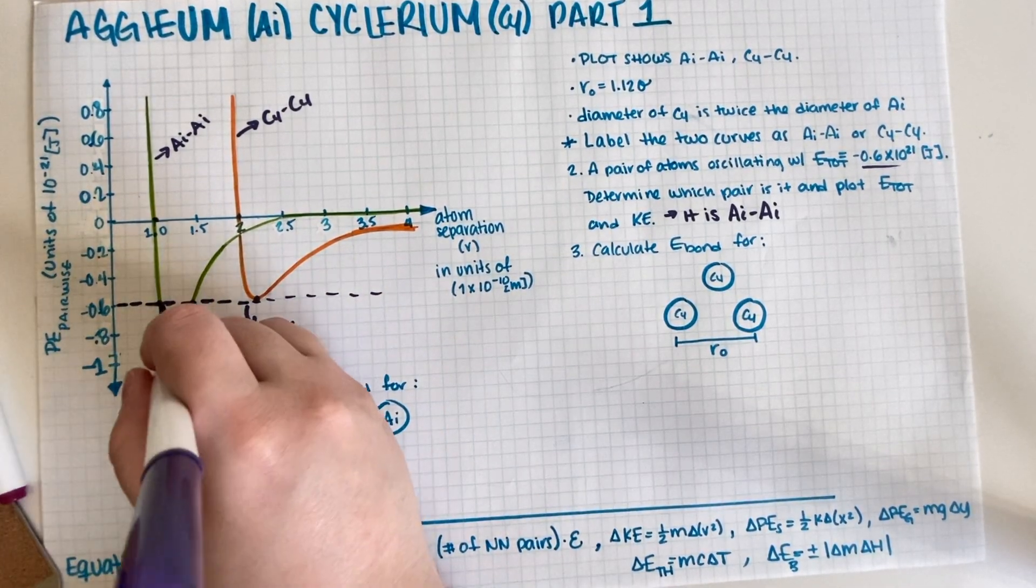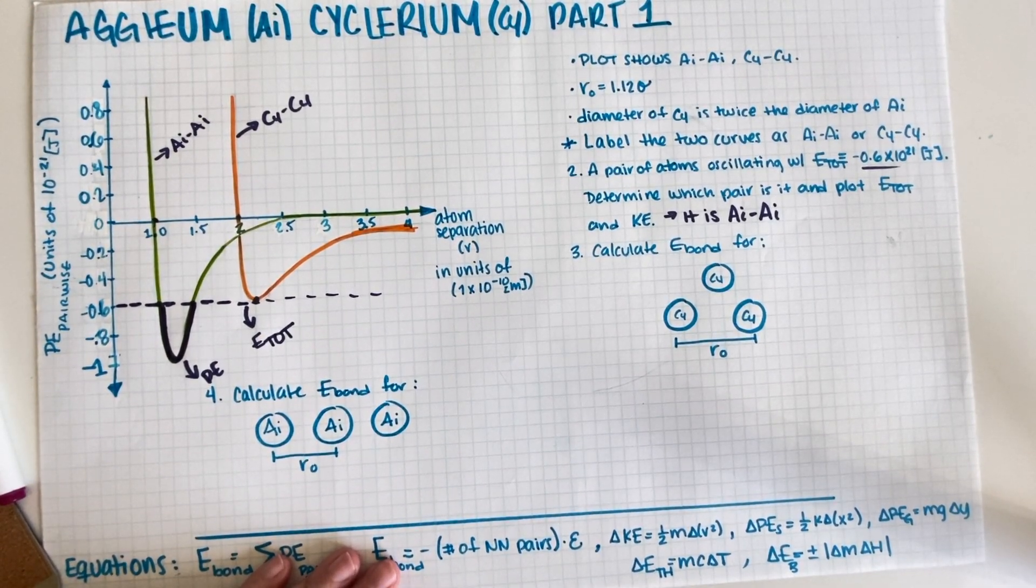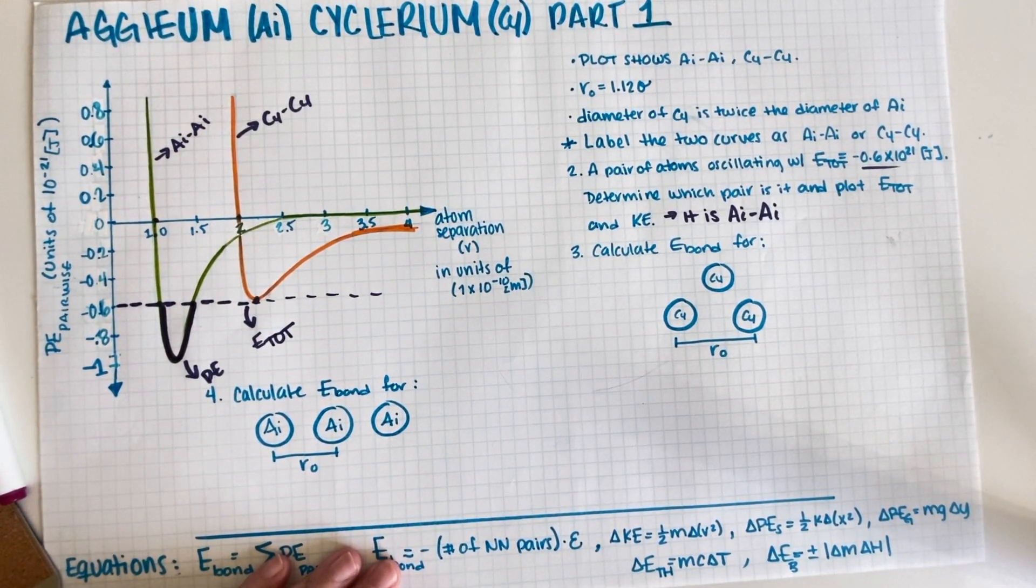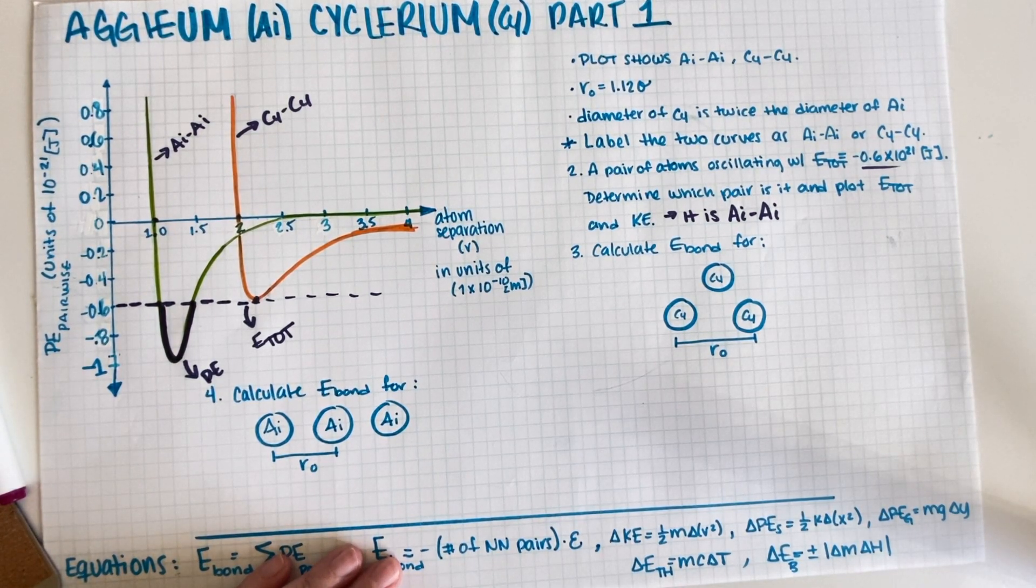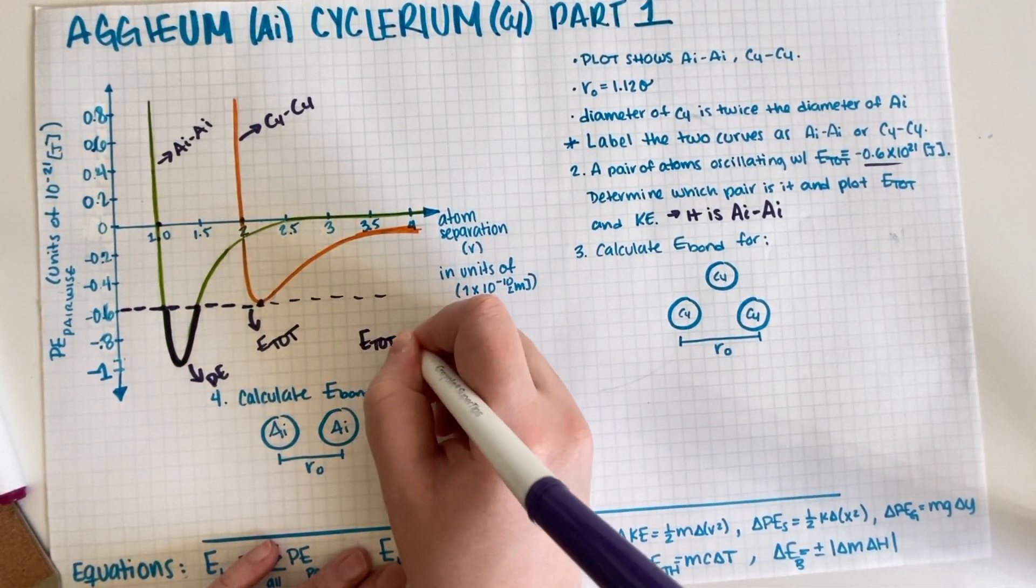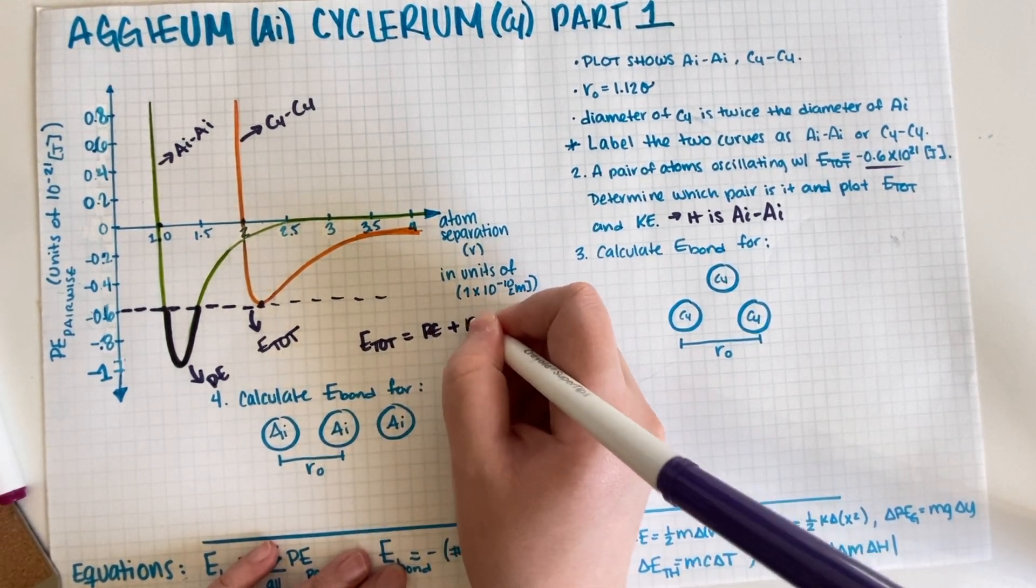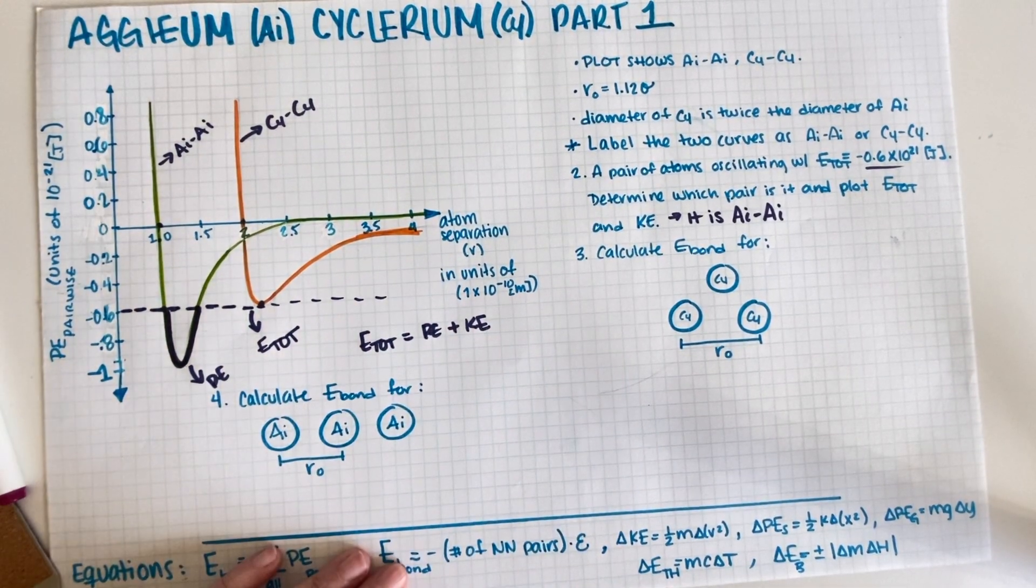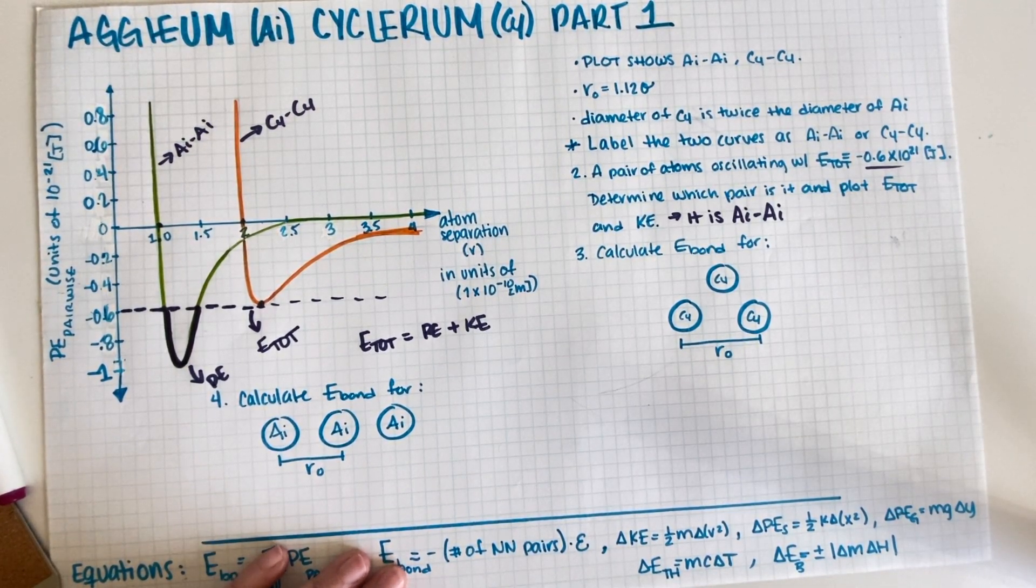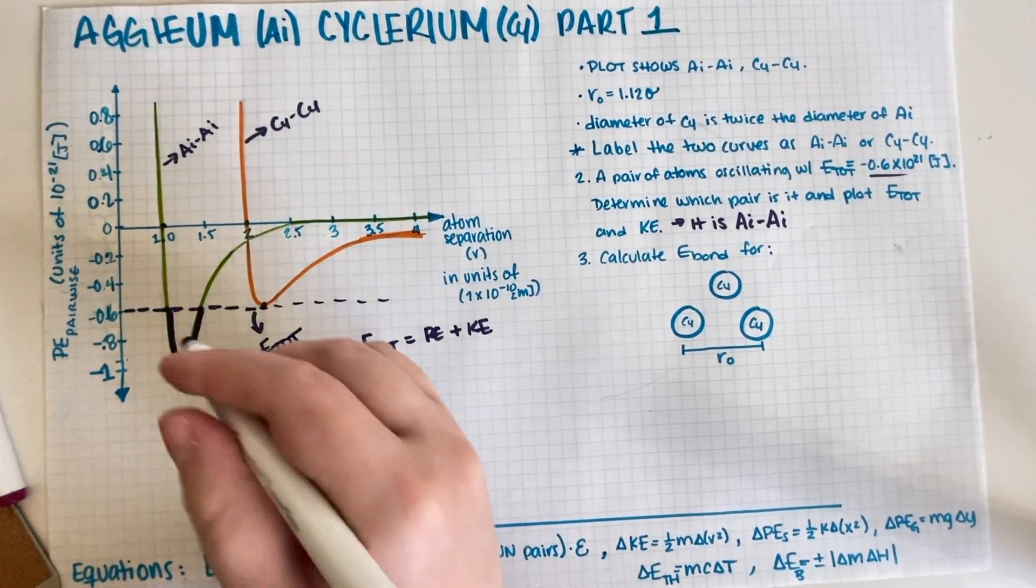Then this is potential energy, so now we only have to do the kinetic energy. So kinetic energy we figure out by remembering that E_total is equal to potential plus kinetic. So they have to add up to -0.6 at every point.